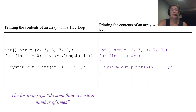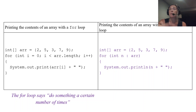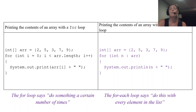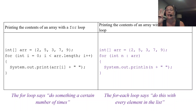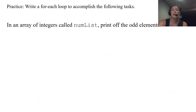The regular for loop says 'do this a certain number of times' and applies to many scenarios. The for-each loop says 'do this with every element in the array or array list.' The for-each is specific to arrays and array lists.